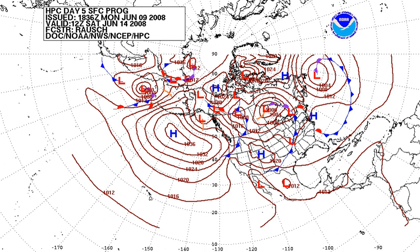Once calculated by hand based mainly upon changes in barometric pressure, current weather conditions, and sky condition or cloud cover, weather forecasting now relies on computer-based models that take many atmospheric factors into account. Human input is still required to pick the best possible forecast model to base the forecast upon, which involves pattern recognition skills, teleconnections, knowledge of model performance, and knowledge of model biases.